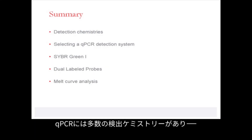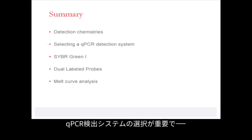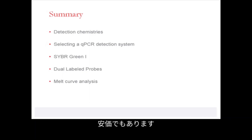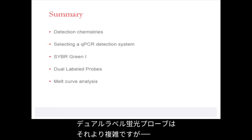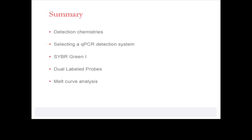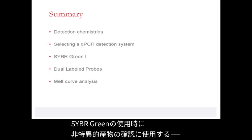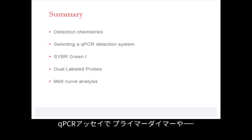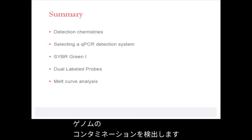In summary, there are a number of detection chemistries in qPCR which will improve the flexibility and specificity of the design. The selection of a qPCR detection system is important and depends on your assay conditions. SYBR Green 1 is one of the simplest and most often used — and cheapest — chemistries in qPCR. The dual-label fluorescent probes are more complex; however, they are very sensitive and can be very specific in qPCR quantification. I briefly described the melt curve analysis, which is used to study non-specific products when using SYBR Green, specifically to detect primer dimers or genomic contamination in your qPCR assay.